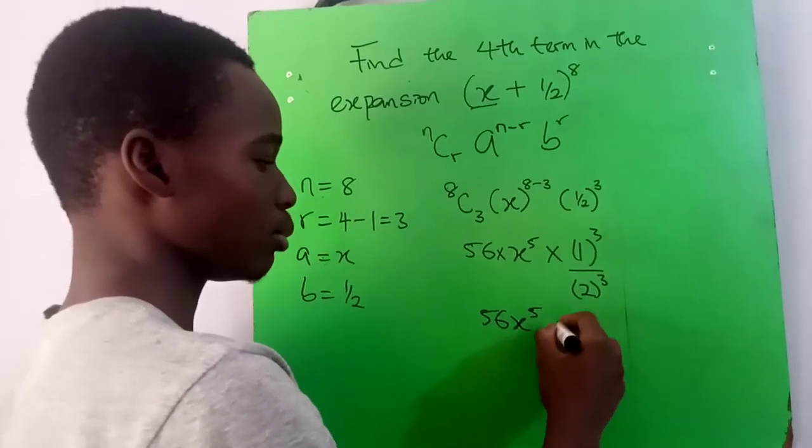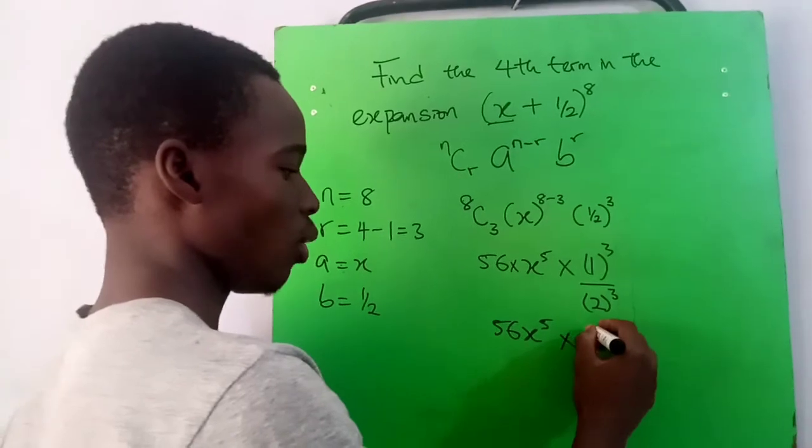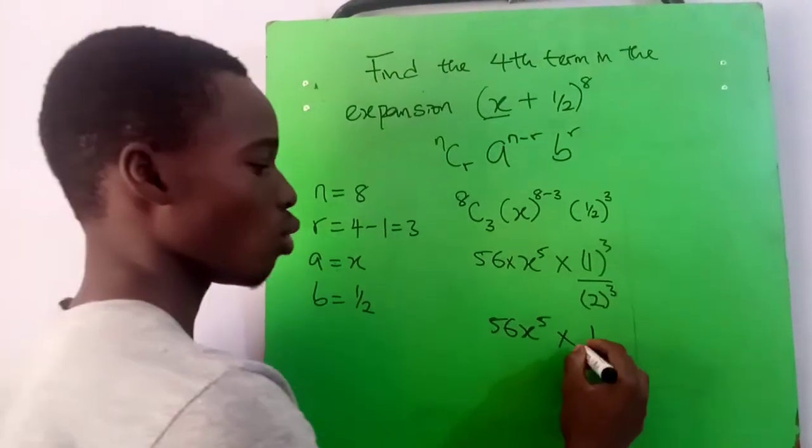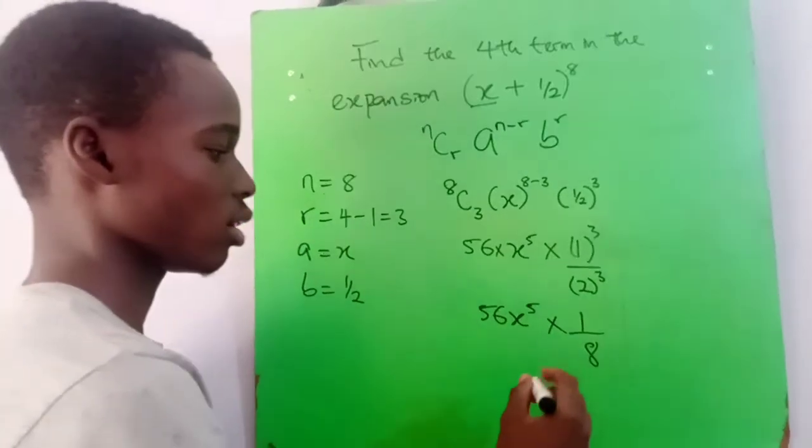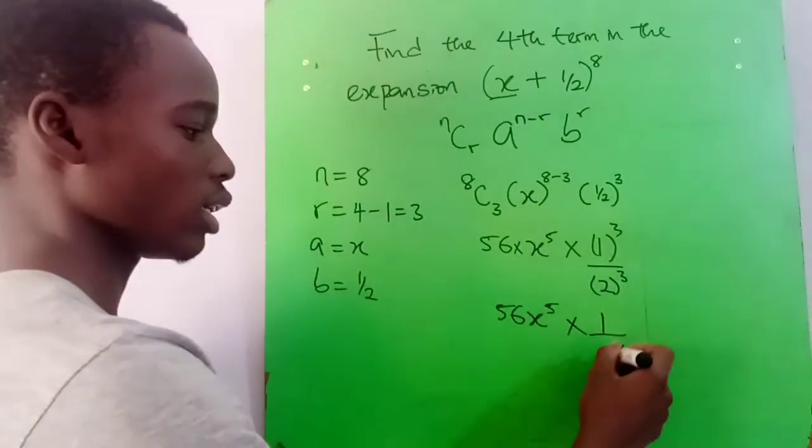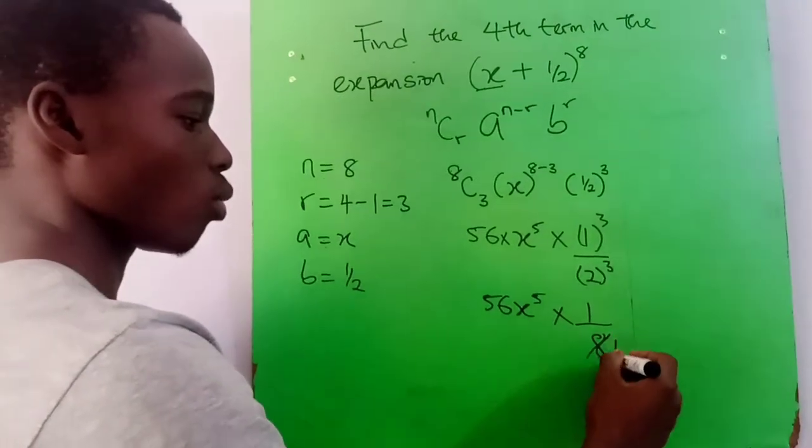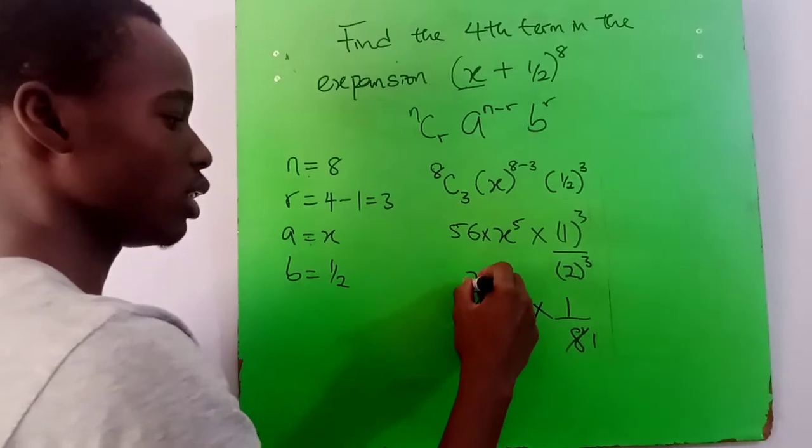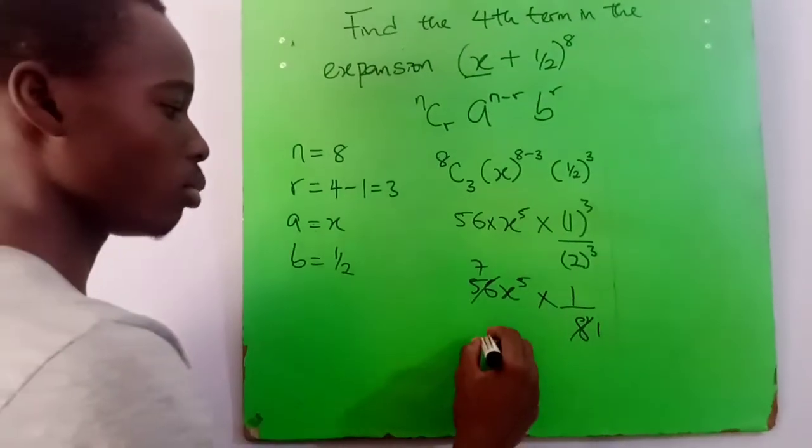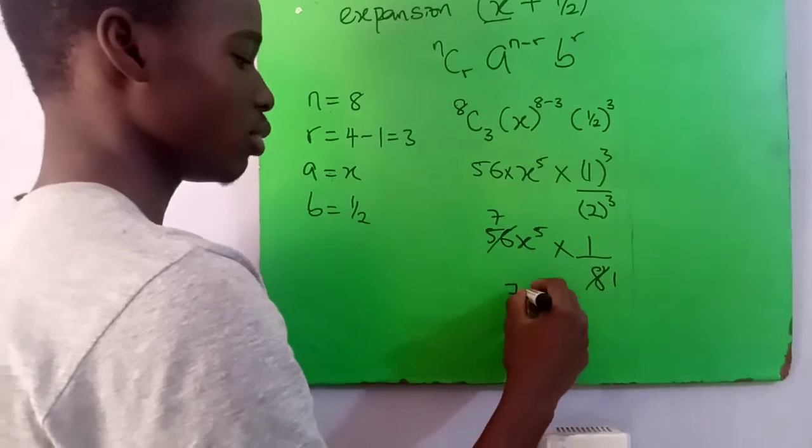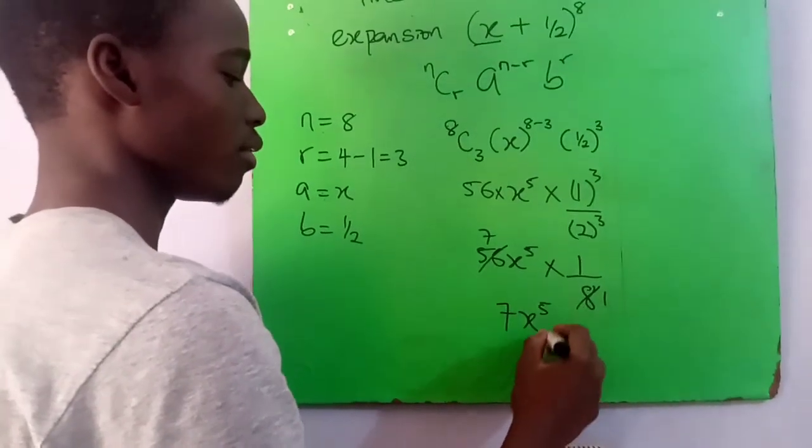So we can cancel out eight here. Eight into 56 gives us seven. So it becomes seven times x raised to the power five. 7x^5 will be the value of the fourth term in this expansion.